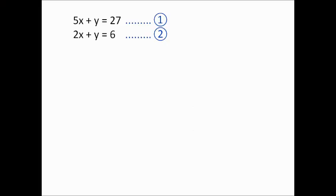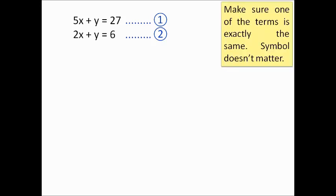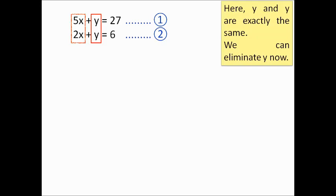Now the first worked example: 5X plus Y equals 27, and 2X plus Y equals 6. I have labeled these as equation 1 and equation 2. First step: make sure one of the terms is the same — whether X on the top and bottom is exactly the same, or Y on the top and bottom is exactly the same. In this case, Y and Y are the same, so we are going to eliminate Y. We must eliminate the term which is the same on top and bottom — Y and Y, 2X and 2X, 5X and 5X — positive or negative doesn't matter.